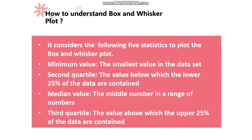The five statistics are: minimum value, first quartile, median value, third quartile, and maximum value. Let me show you how it can be done, but before that let me give you a brief of what these are. Minimum value is nothing but the smallest value in the data set.